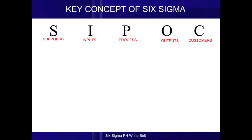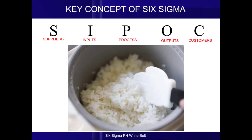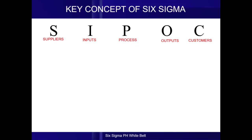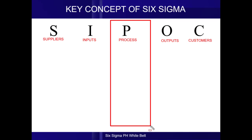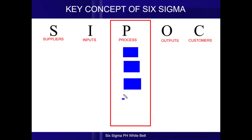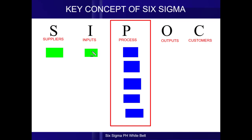Let us map out a SIPOC diagram of a process that we're all familiar with — how to cook rice. When you facilitate a SIPOC mapping session, you start first with the process column. With all of the relevant process owners present, you map out all of the process steps from top going down, then identify all of the inputs you need for each step. After identifying the inputs, you then identify the suppliers where to get the inputs.